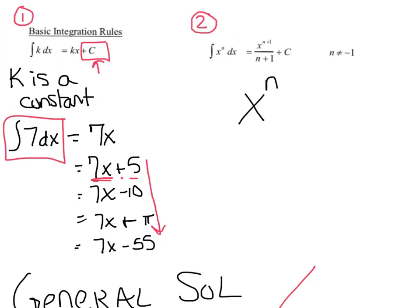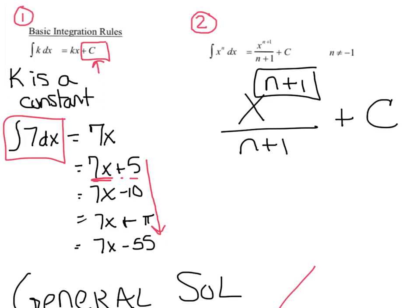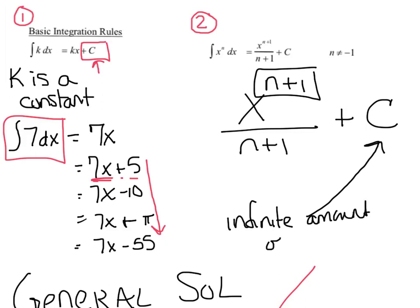So I take my x to the n, add 1, then divide by whatever that number is, and get a general solution of plus c. All indefinite integrals have this plus c, meaning there is an infinite amount of answers — that means there is an infinite amount of answers.